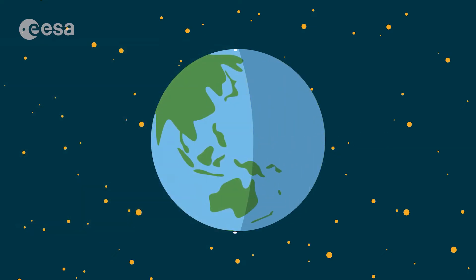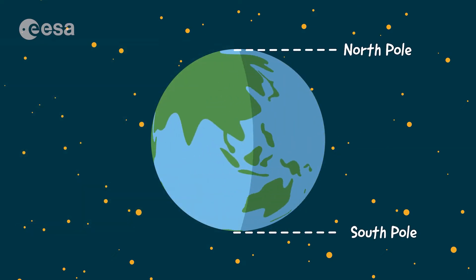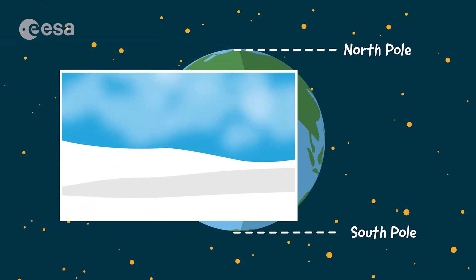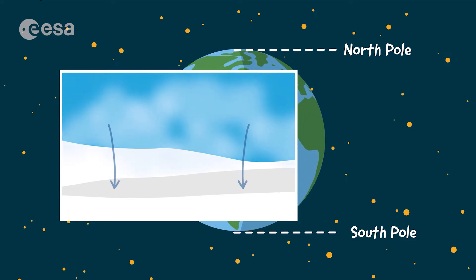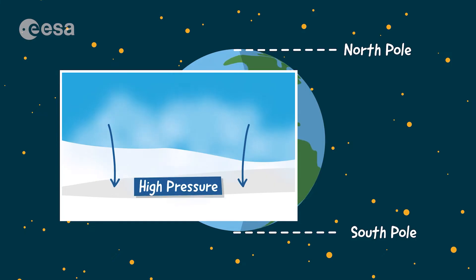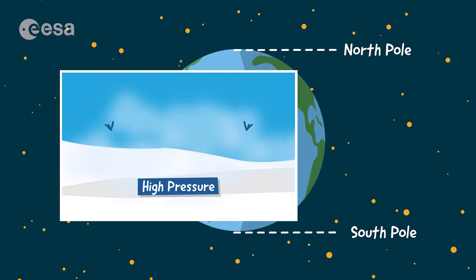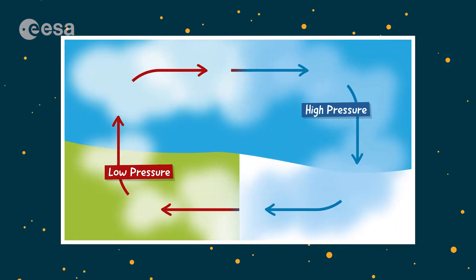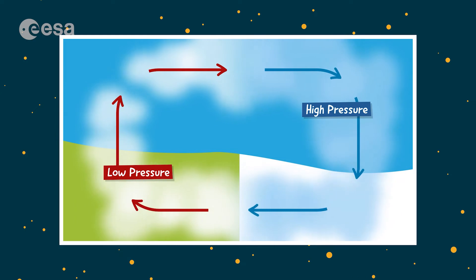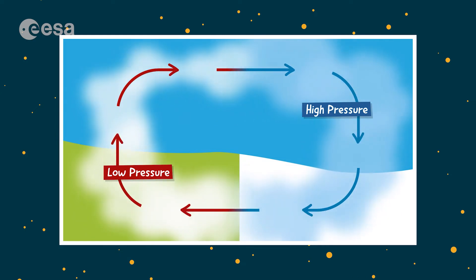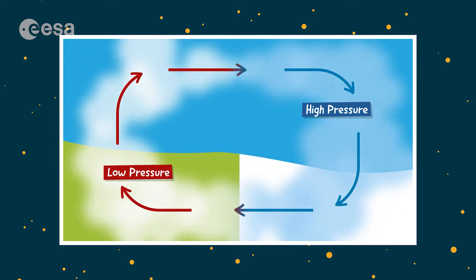Here at the poles, it is cold, so the gases stay close together and push down even more on Earth, creating an area of high pressure.